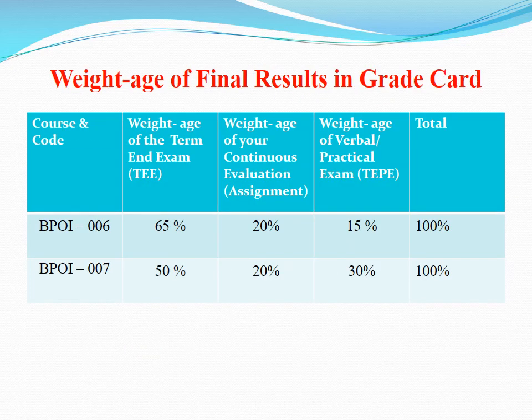Weightage of final results in the grade card for BPI-007: 50% weightage will be given to the term-end examination, 20% weightage to continuous evaluation or assignment, and 30% weightage to practical exams. Total weightage is 100%.